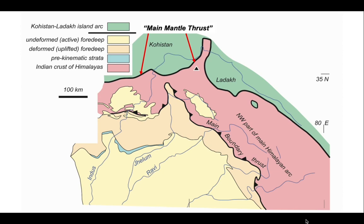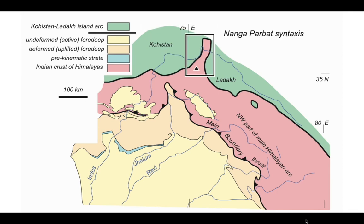The main mantle thrust is a rather dramatic name for the tectonic suture between rocks that originally started as part of the Asian continent — here in green, the Kohistan-Ladakh Island Arc — and the rocks of the Indian continent which lie to the south. The main mantle thrust is the suture between the originally two distinct continental bodies, and you can see that it forms a loop around the black triangle. This is the Nanga Parbat syntaxis, and the black triangle is Nanga Parbat itself.